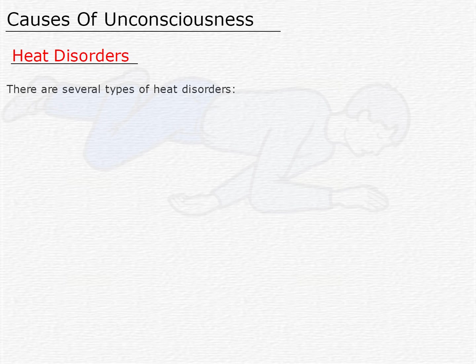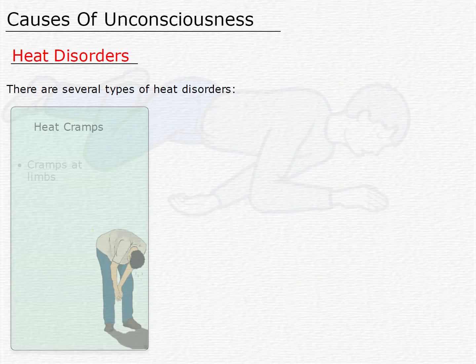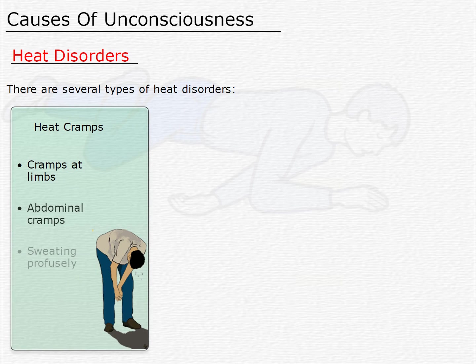There are several types of heat disorders. Heat cramps, which include cramps at limbs, abdominal cramps, sweating profusely, etc.